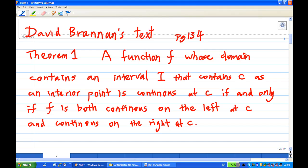according to David Brennan's text page 134 Theorem 1, it says that a function f, whose domain contains an interval containing the point c as an interior point, is continuous at point c if and only if the function f is both continuous on the left of the point c and continuous on the right of c.